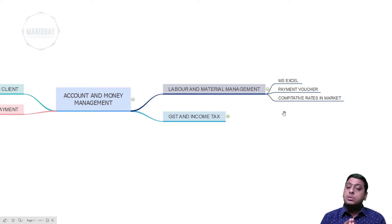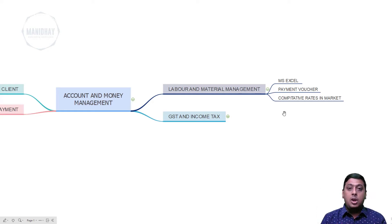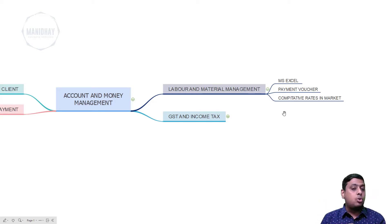To do this material and labor management — to keep those accounts — you can use a simple MS Excel sheet, wherein you will have one sheet for labor and one sheet for material management. You can update it every day: what material has been brought to the site, what has been consumed, how many laborers have worked — Mason, male helper, female helper, carpenter — and what wages you are paying. You don't need any high-end technical software.